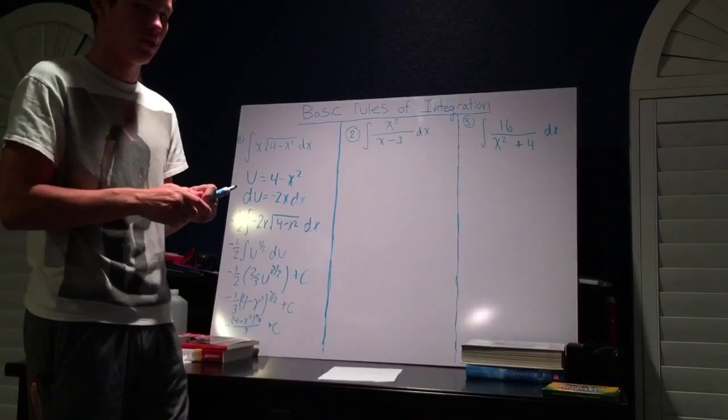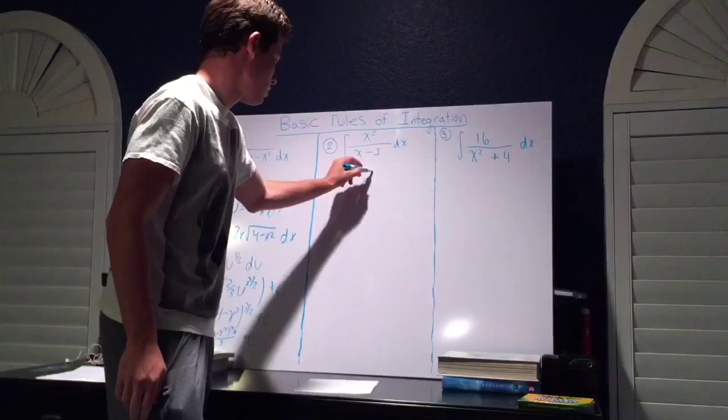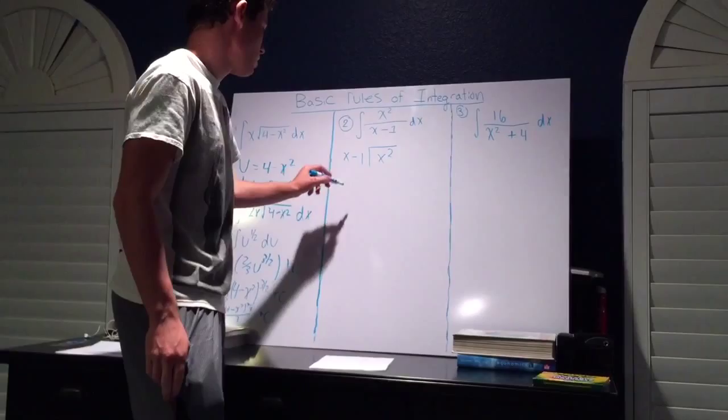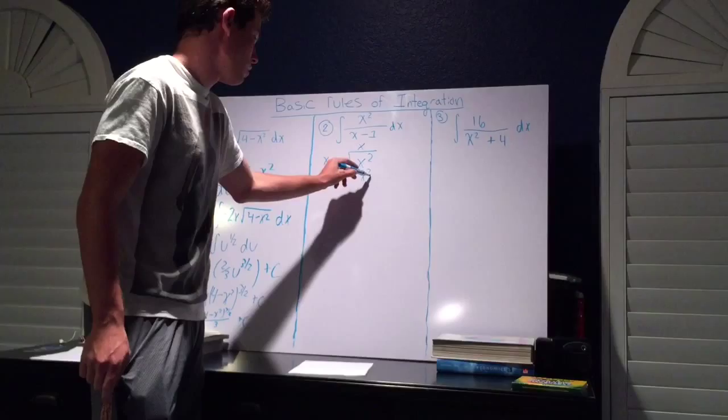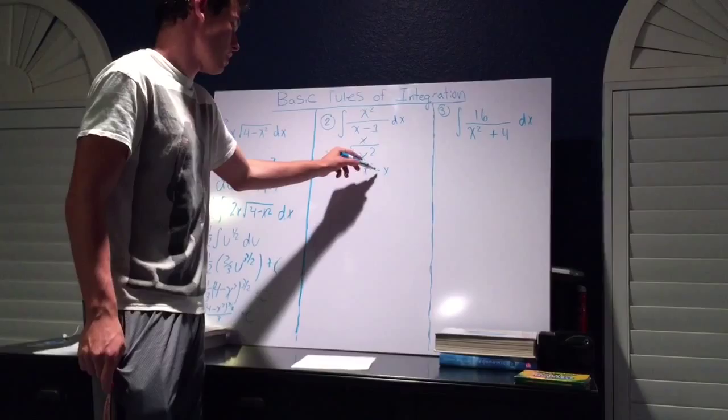Using long division, we're going to do x squared divided by x minus 1. We know that x times x gives you x squared, and distributing that to what we're dividing by, we'll get x squared minus x. Now we have to subtract that in order to cancel things out and simplify it. So we're going to cancel these and we get x.